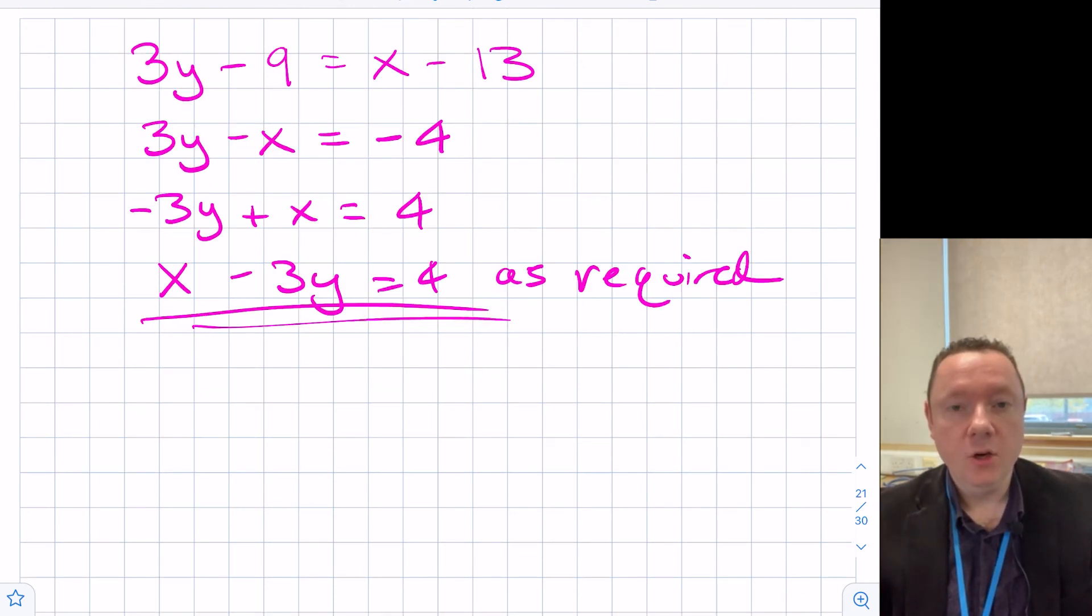This has been Clare on Maths. Today we've been looking at how to find the equation of an altitude of a straight line. Remember, an altitude is a line which goes from a vertex of a triangle to the opposite side and cuts it at right angles. Looking forward to my next video where we'll be looking at medians, and take care, stay safe, and goodbye.